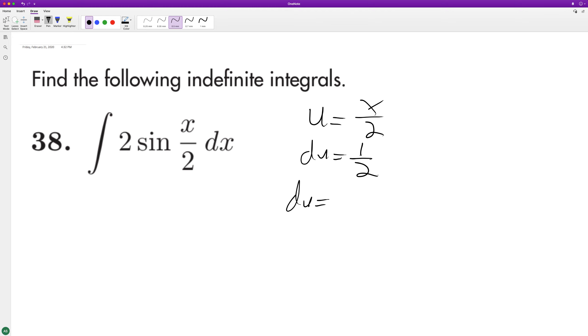So you get du equal to dx. We need to multiply it by 4. When we integrate it, when we put 4 out, we have integral of sine of u du.